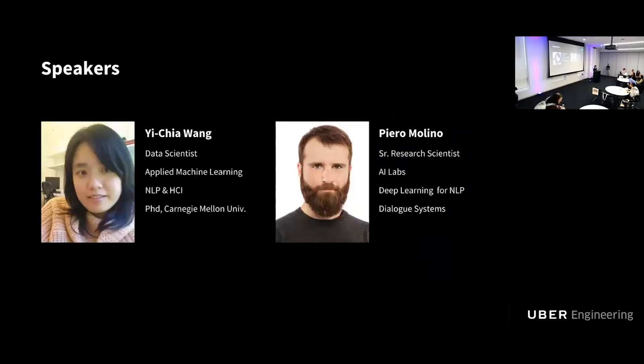My name is Yijia Wang. I'm a data scientist in the Applied Machine Learning team. I received my PhD from Carnegie Mellon University before I joined Uber, and my background is natural language processing and human-computer interaction. Piero is a senior research scientist at Uber AI Labs. He's an expert in natural language processing, deep learning, and dialogue systems.